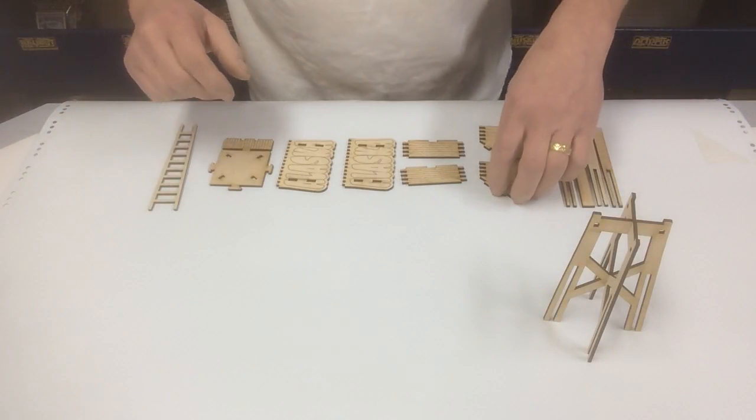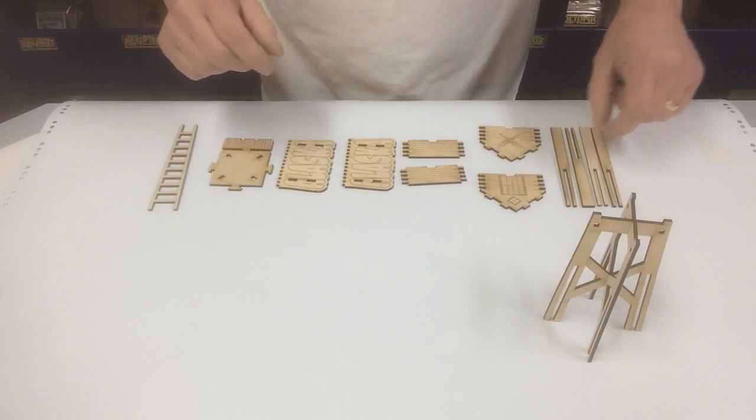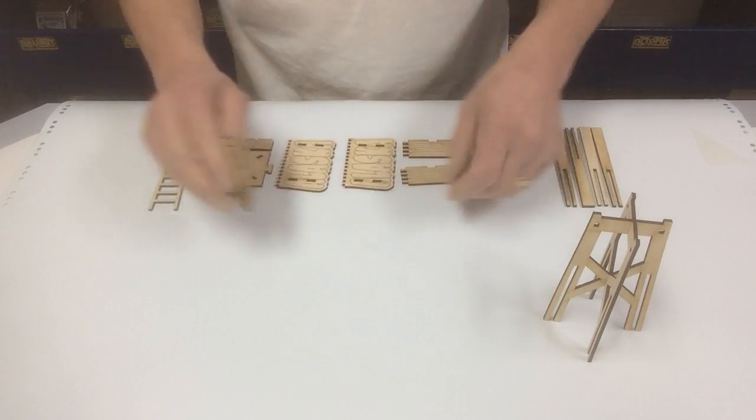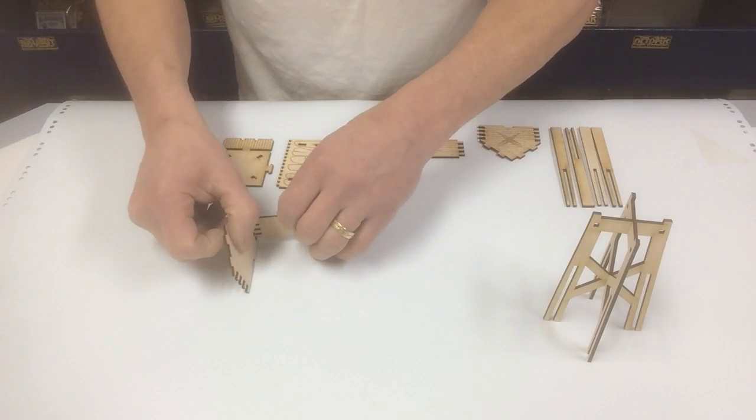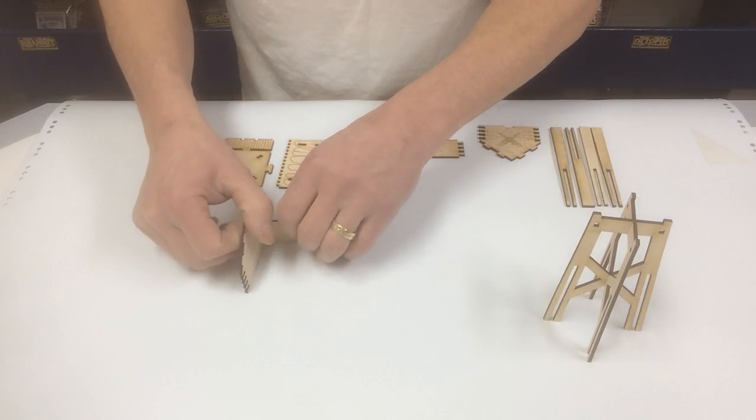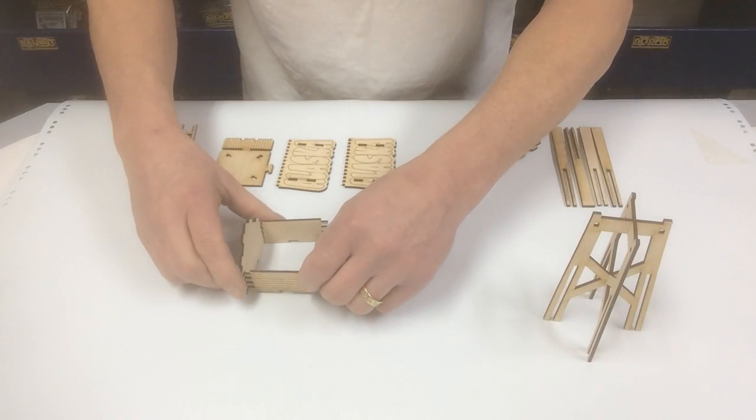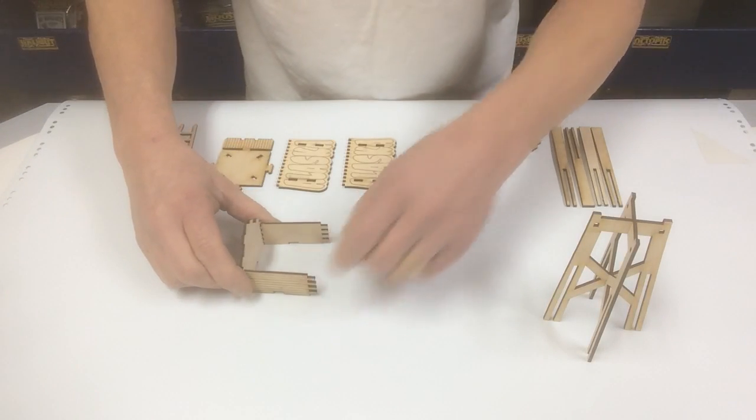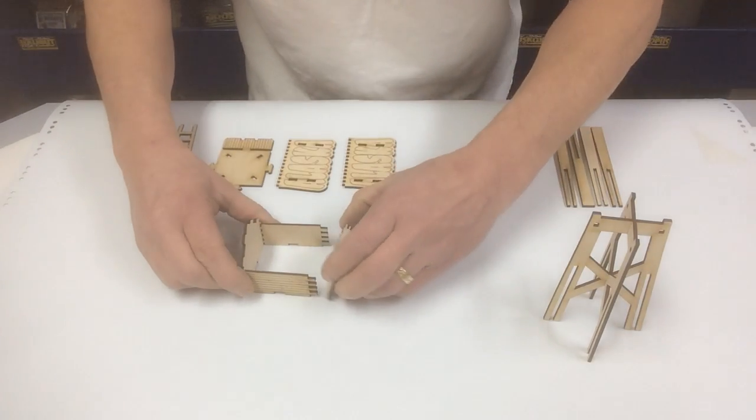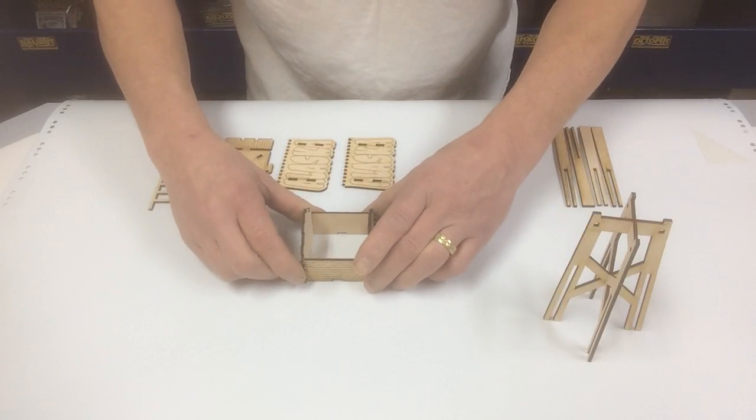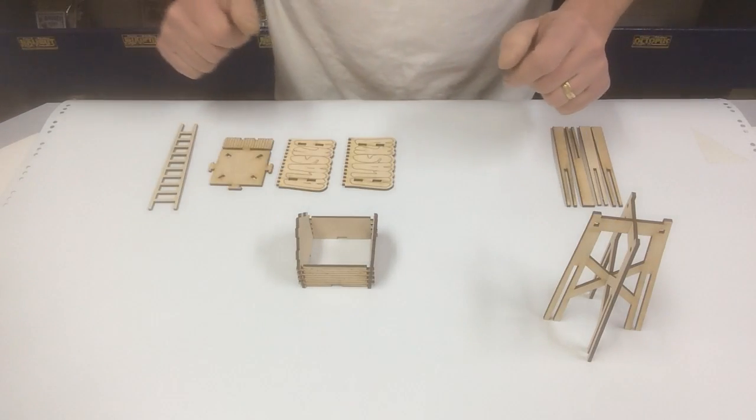Pull out part 3 which has the door on it, part 4 as a sidewall, part 5, and we're just aligning those notches. Part 6, if you've got a flat surface to work with you'll be way ahead here.